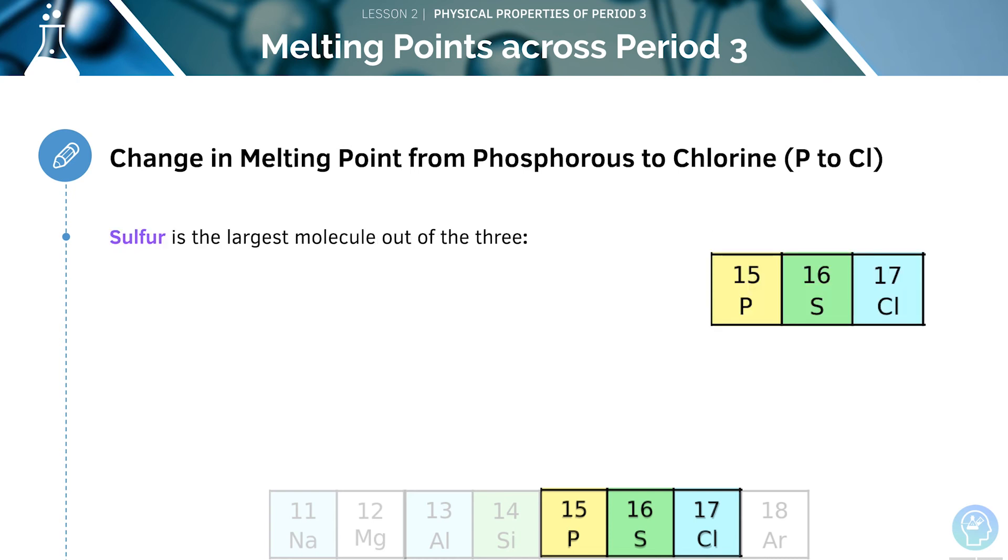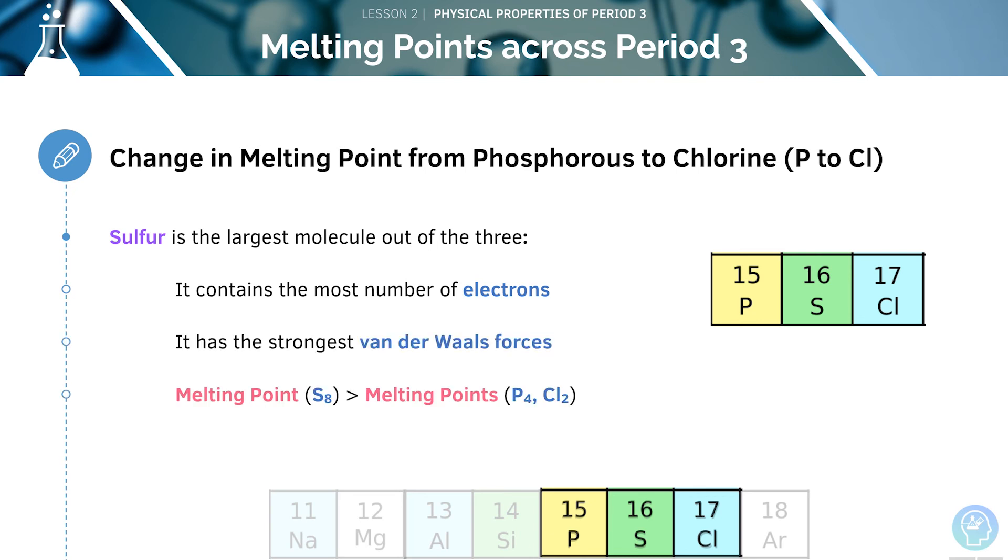As sulphur is the largest molecule out of the three, it will contain the highest number of electrons and therefore have the strongest van der Waals forces. Therefore, it will have the highest melting point compared to phosphorus and chlorine.